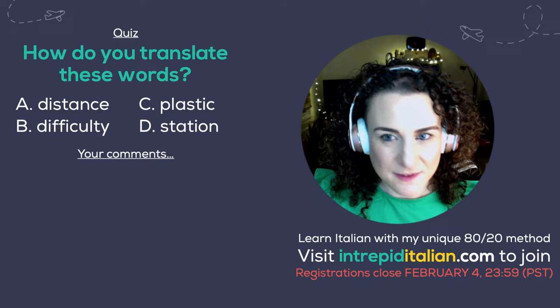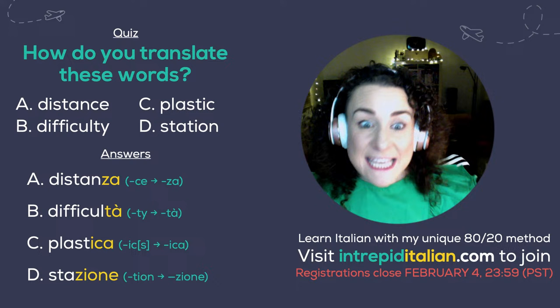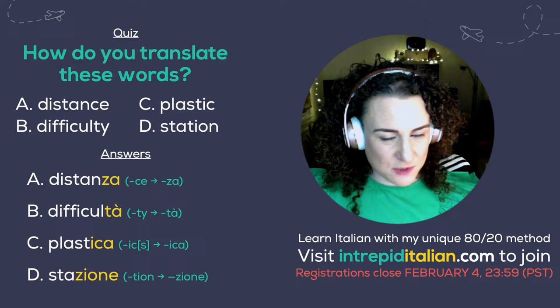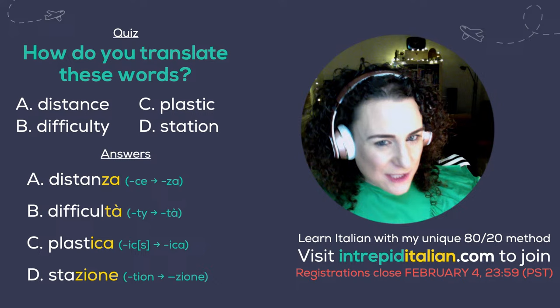And the answers are: distance becomes 'distanza' — that CE becomes ZA. Difficulty becomes 'difficoltà' — TY becomes TÀ. Plastic becomes 'plastica.' And station becomes 'stazione.' How many did you get right — one, two, three, or four?